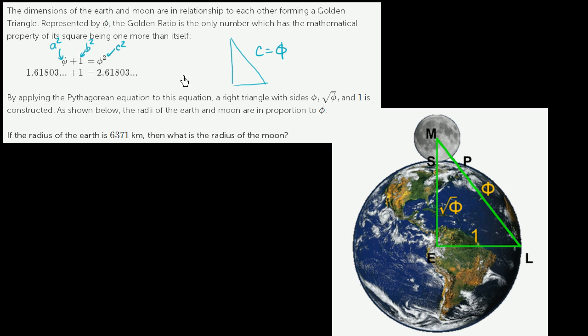Where our hypotenuse c is equal to phi, this side, the shorter side b, is equal to 1. The square root of 1 is just 1. And the longer side, but not the longest, the longer of the two non-hypotenuse sides is going to be the square root of phi. Square root of phi. That's all they're saying with that first sentence.